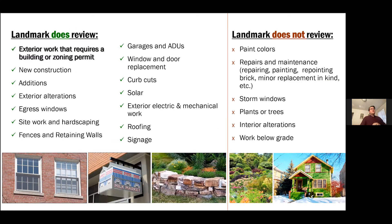To get a little more specific about what Landmark really does review: our rule of thumb is if it requires a building or zoning permit, it requires Landmark Preservation review first. That includes new construction, additions, exterior alteration, window replacement, and egress windows — that's something very common — as well as signage and roofing. Things that we do NOT review include paint colors — you can paint your historic house whatever color you like — general repairs and maintenance like repointing or storm windows, interior alterations, and we also don't review planting or trees as part of landscape features.